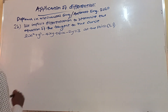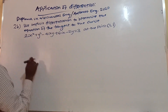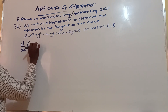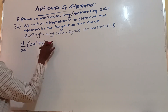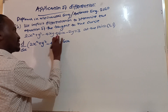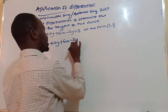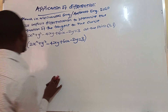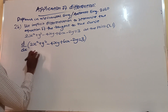Now let us differentiate using implicit differentiation with respect to x. We have 2x squared plus y squared minus 4xy plus 6x minus 2y equals 3. Differentiating 2x squared, we get 4x.